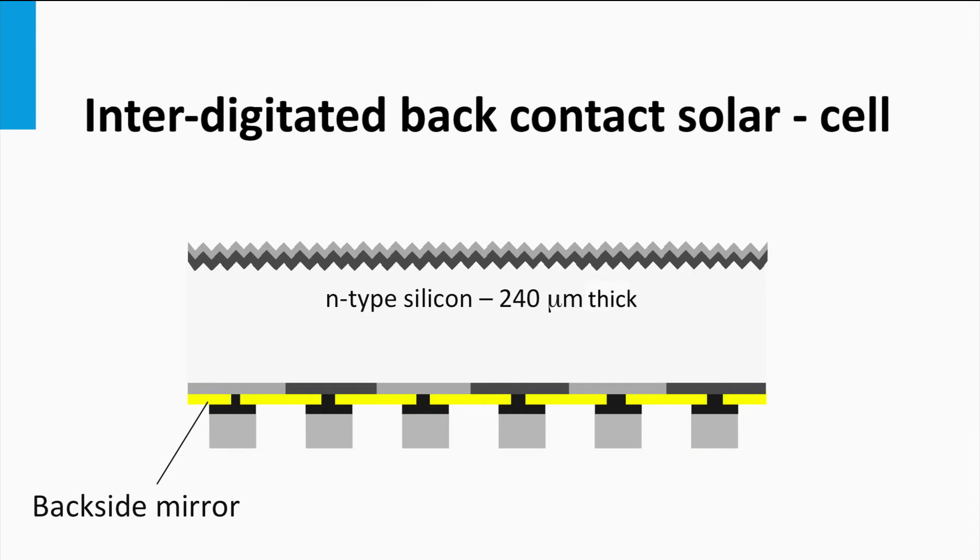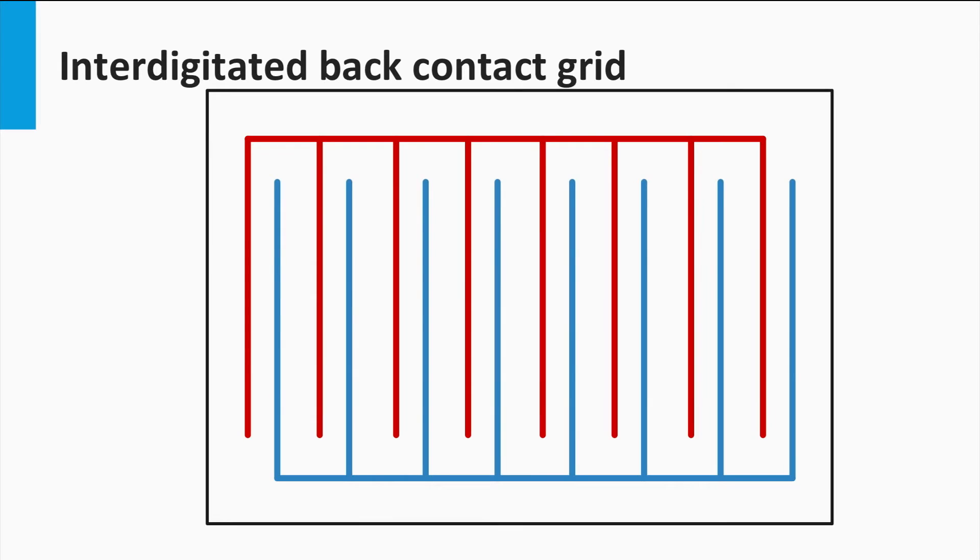The passivation layer can have a low refractive index such that it operates like a backside mirror. It will reflect the light above 900 nm, which is not absorbed during the first pass, back into the absorber layer, enhancing the absorption path length.